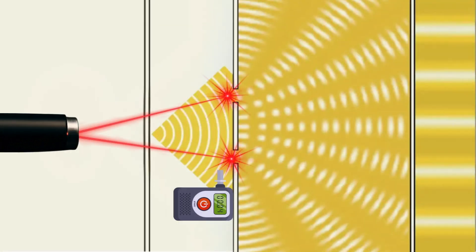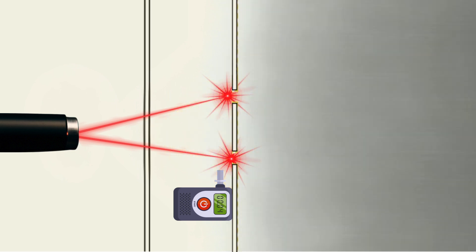However, if an observer intervenes during the experiment, in other words, if we determine which slit the photon passed through, the wave-like behavior disappears. The interference pattern vanishes, and we see only two distinct lines.